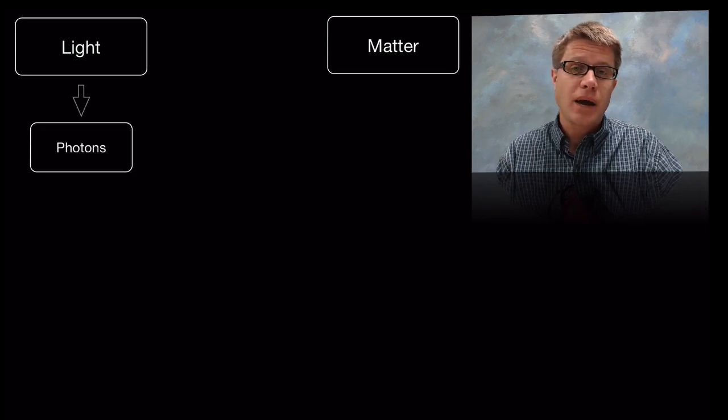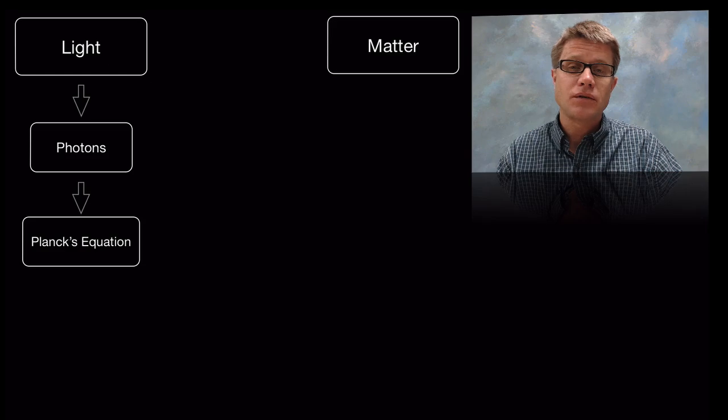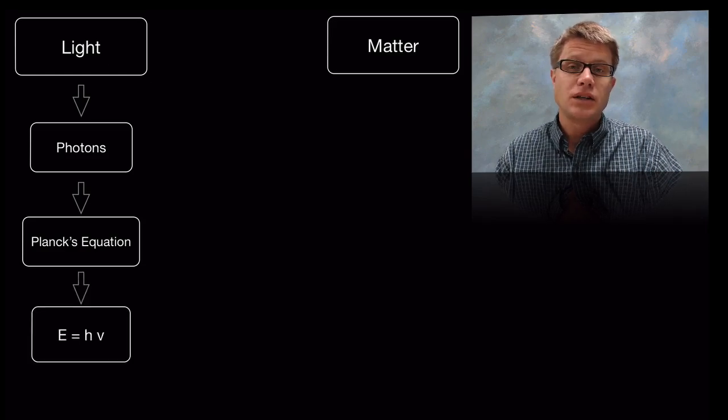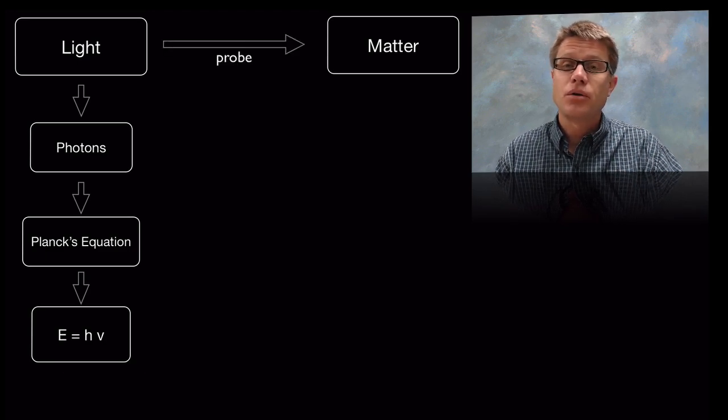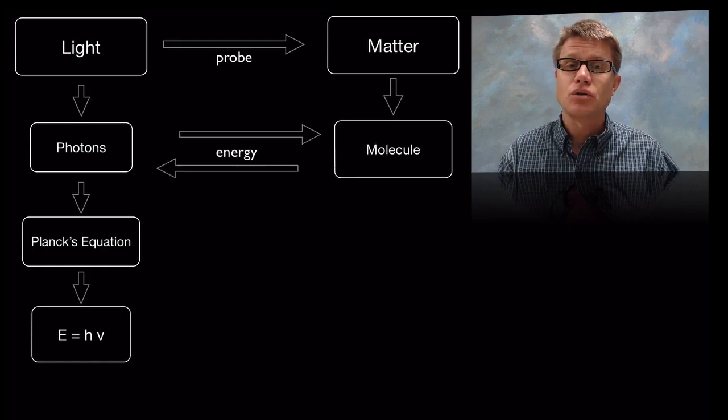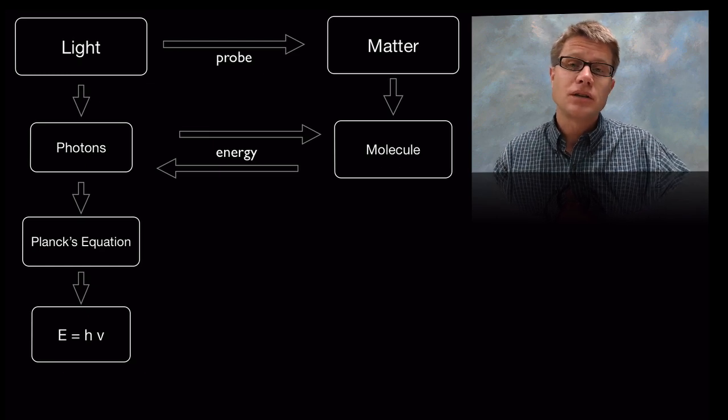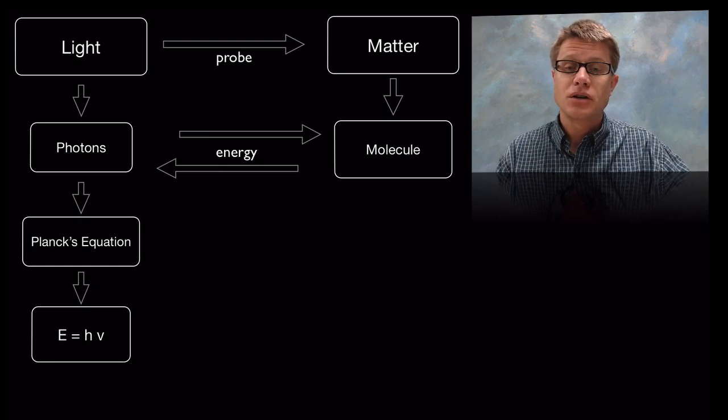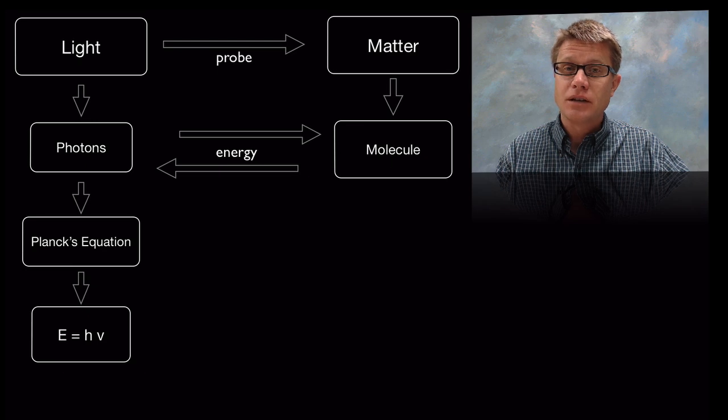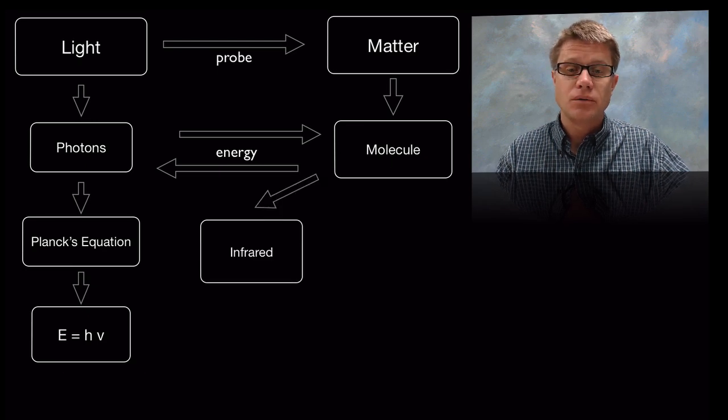Light travels in these little packets called photons, and we can quantify its light using Planck's equation where energy is equal to h times nu. H is Planck's constant and nu is the frequency of the light. We can use these little photons to probe matter and figure out what it is. If you have a molecule and it absorbs a photon, it absorbs a certain amount of that energy, and when it releases a photon it releases some of that energy as well.